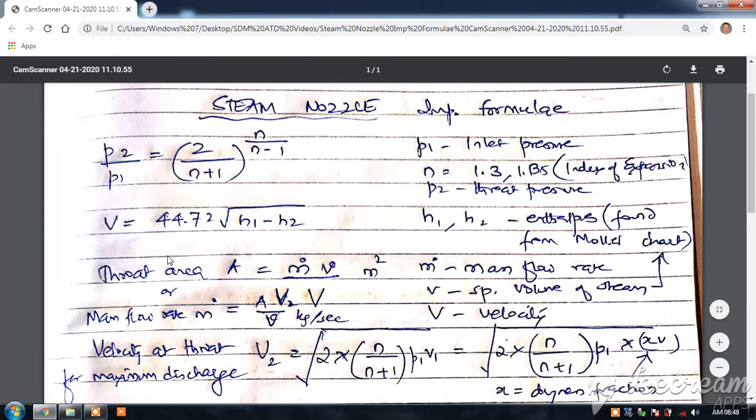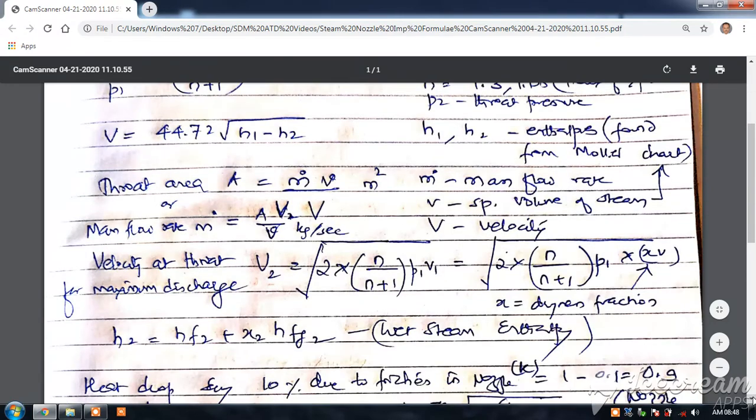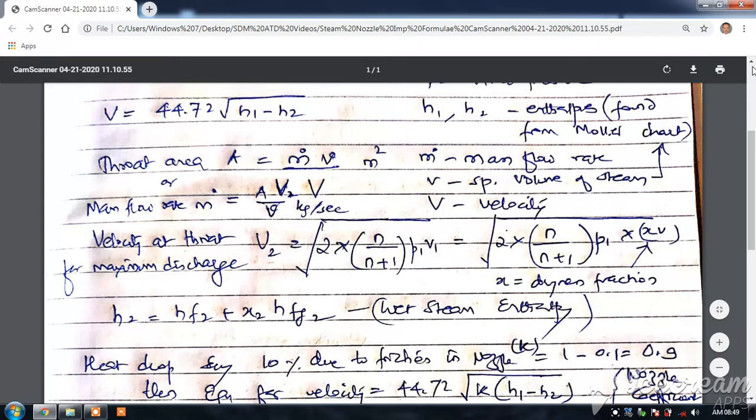Here, 44.72 you got because square root of 2000 is equal to 44.72. This is the enthalpy drop h1 minus h2. Now, to find out the throat area, basically to find out the throat here, h1 and h2 are the enthalpies which are found from the Moller diagram.